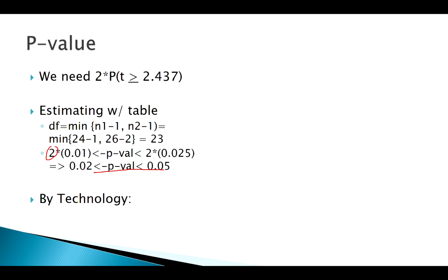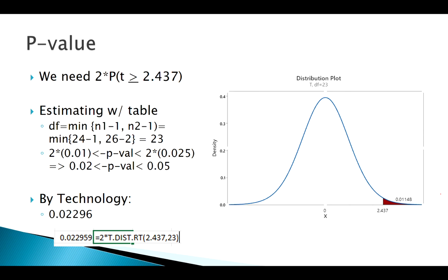Now of course we can always use technology to find an exact p-value. Our exact p-value is this. You can find it in Excel, 2 times your t-dist. And I use t-dist right-tailed here. So, 2 times that. Or, graph it in mini-tab, the area to the right of that. But then you still, you've got to remember, here we go. I've got the area to the right of this, but I've got to multiply by 2 because it's two-tailed.